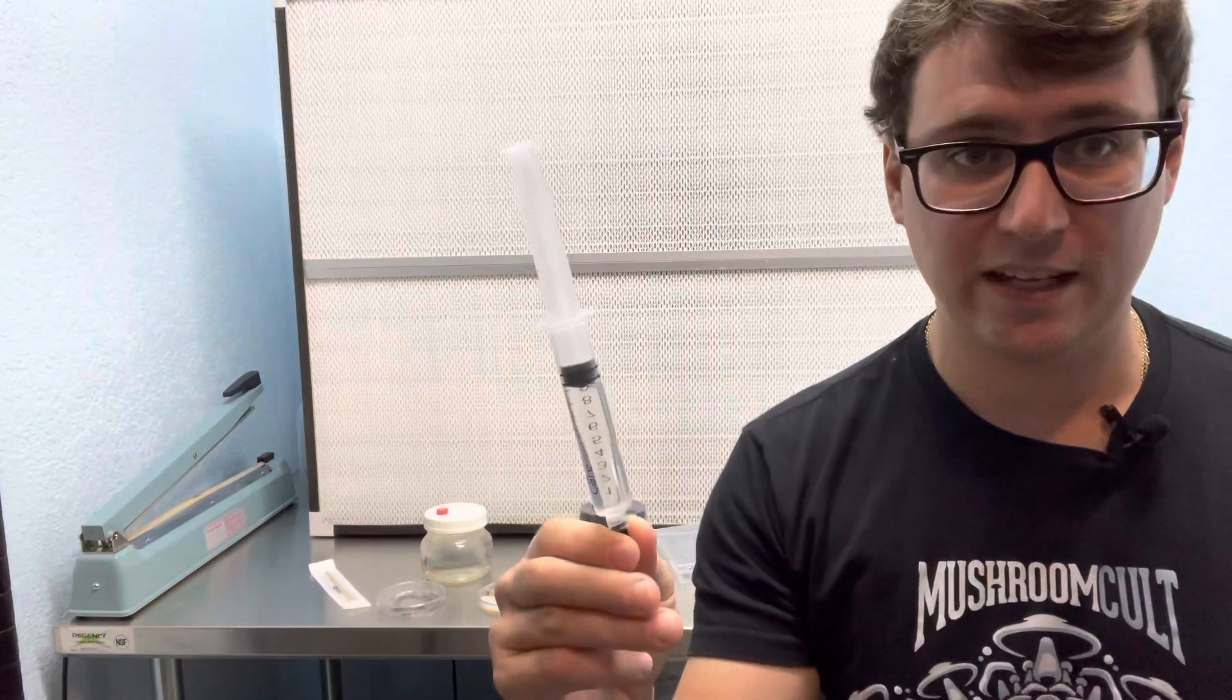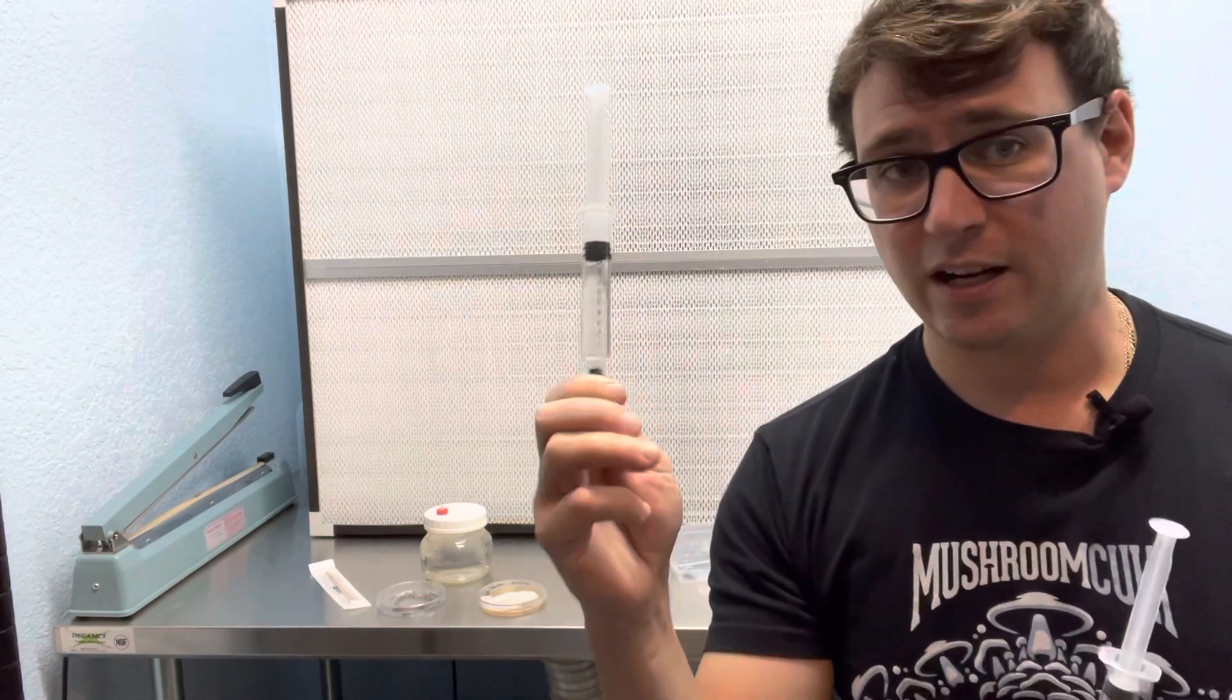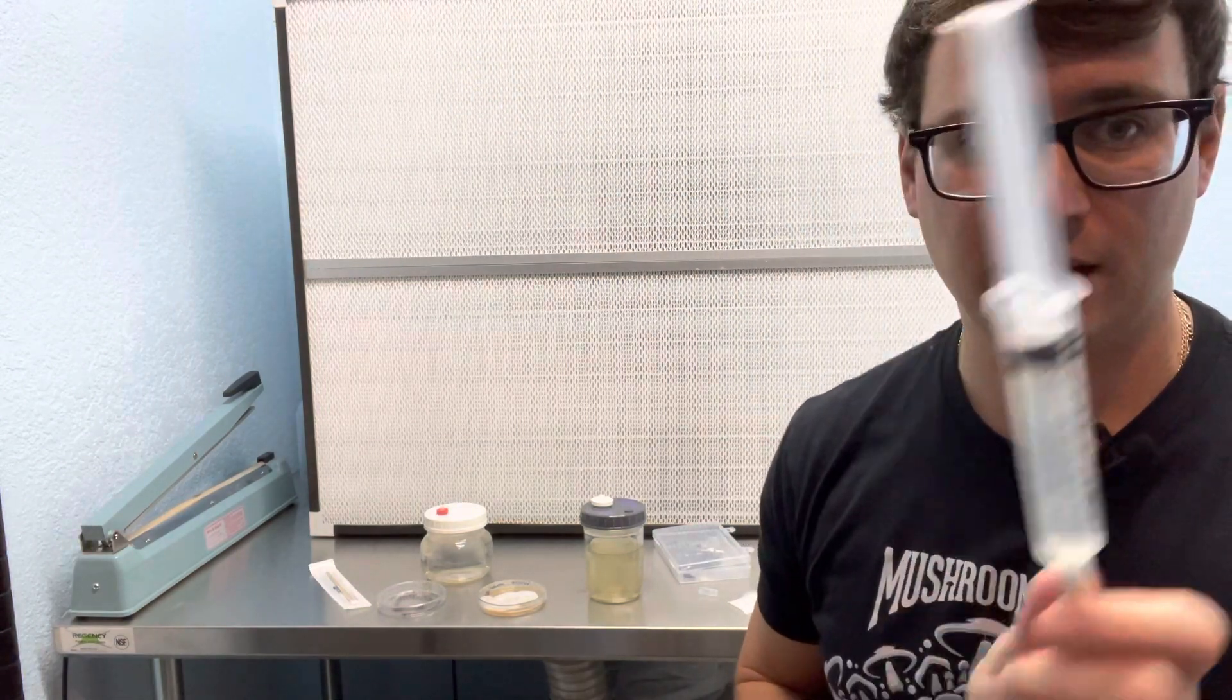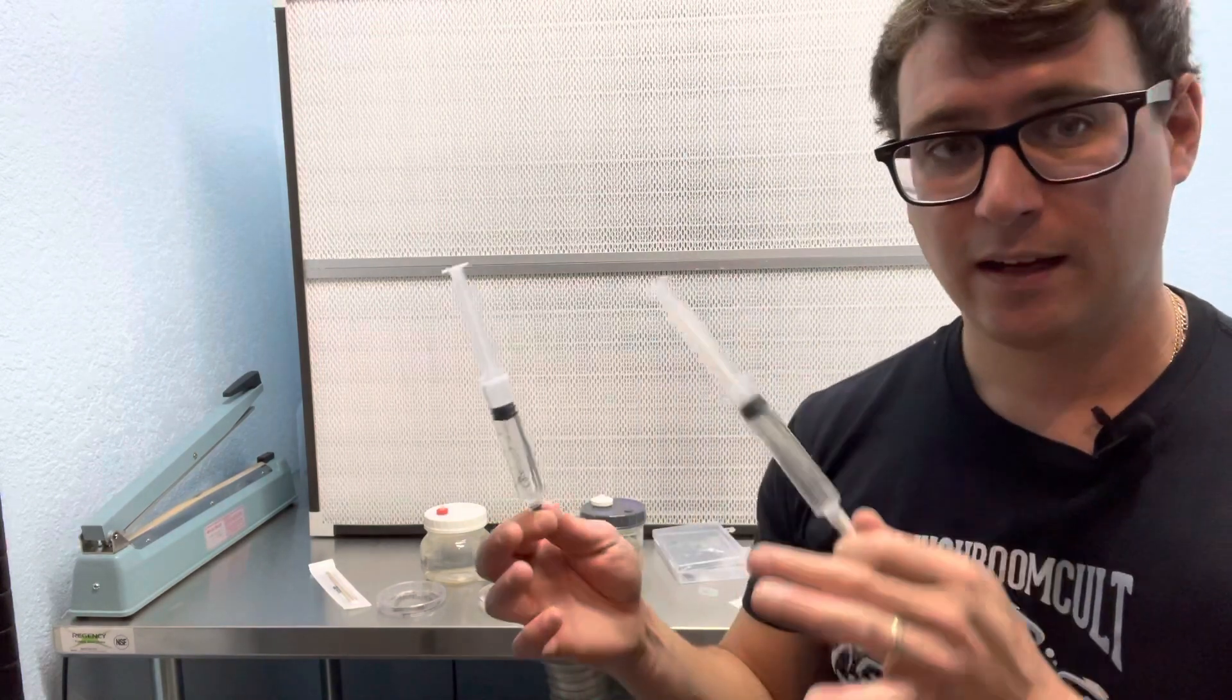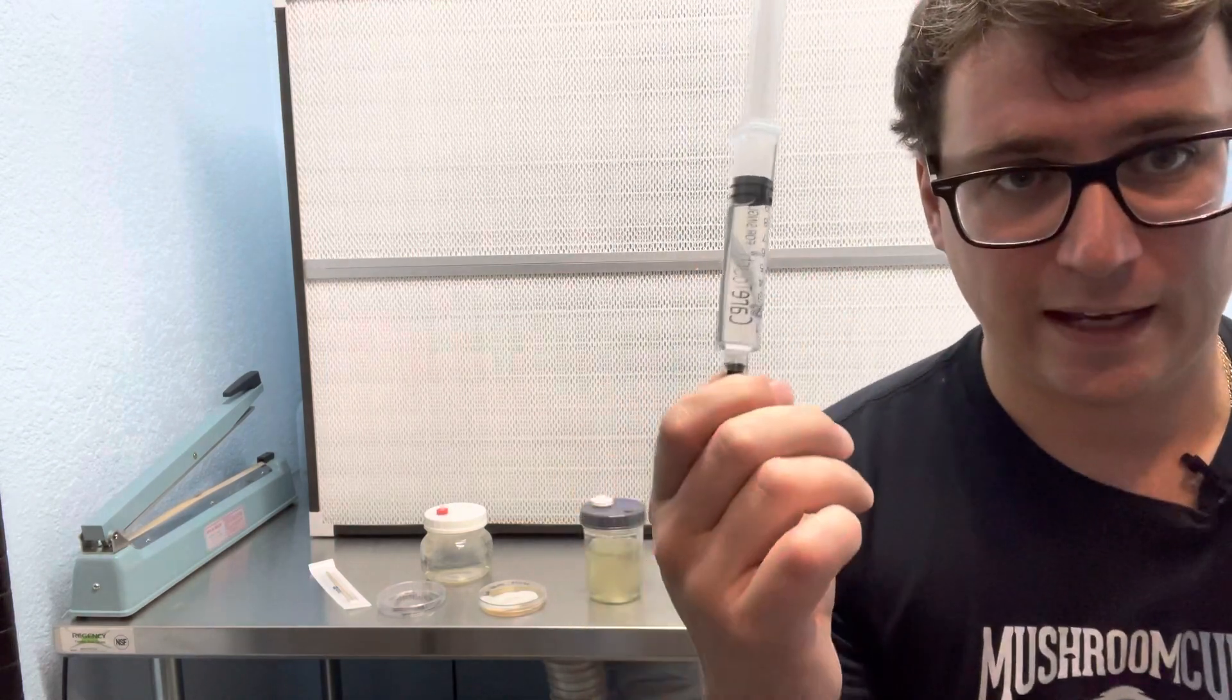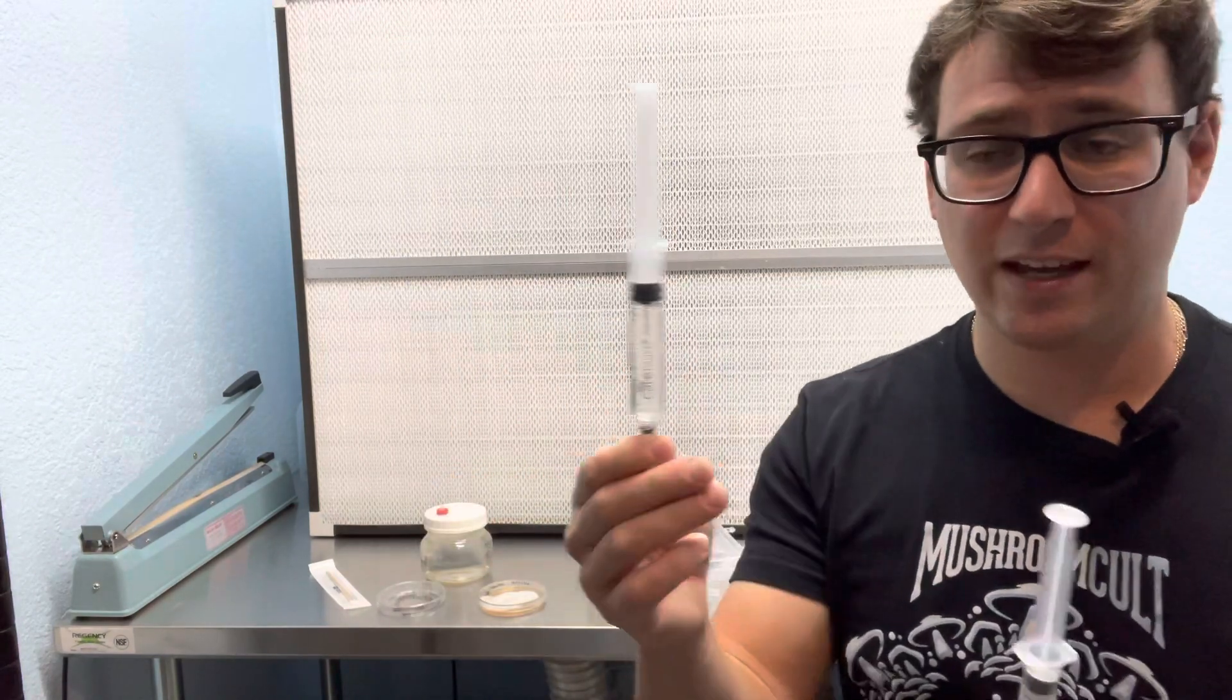The storage of these spores can last years and years and years in a sterile solution, so these are going to last a lot longer than a liquid culture. These can still last years as long as they're kept at the proper temperature, like 37 to 39 degrees for the King Stropharia. For a spore you can pretty much leave these at room temperature as long as they're out of direct sunlight which could potentially kill the spores.